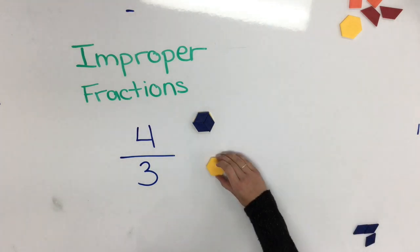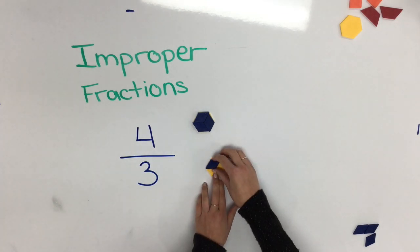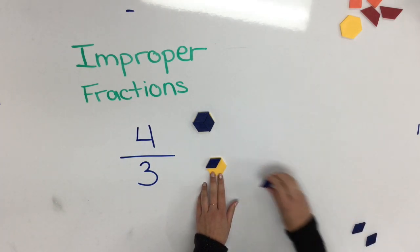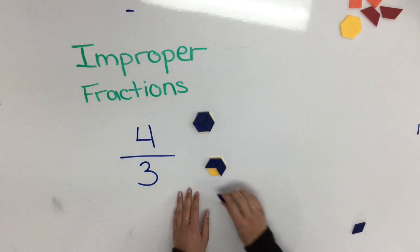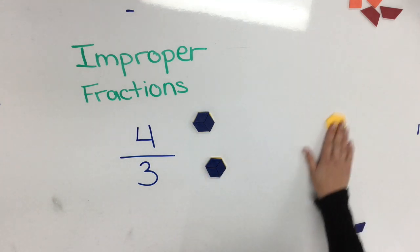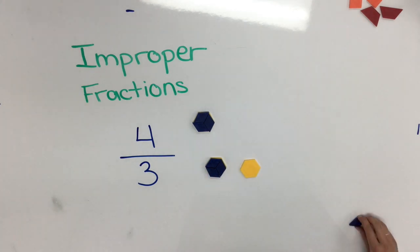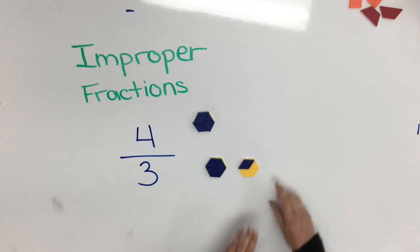If I start again with another whole I can put down one-third, two-thirds, three-thirds, and one more third to make four-thirds all together.